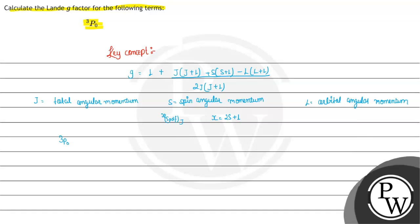So for P, l equals 1. For s, we will find the value by using the multiplicity. We know 3 is the multiplicity, so 3 equals 2s+1, therefore s equals 1. And j here is 0, this is the total angular momentum j which is 0.